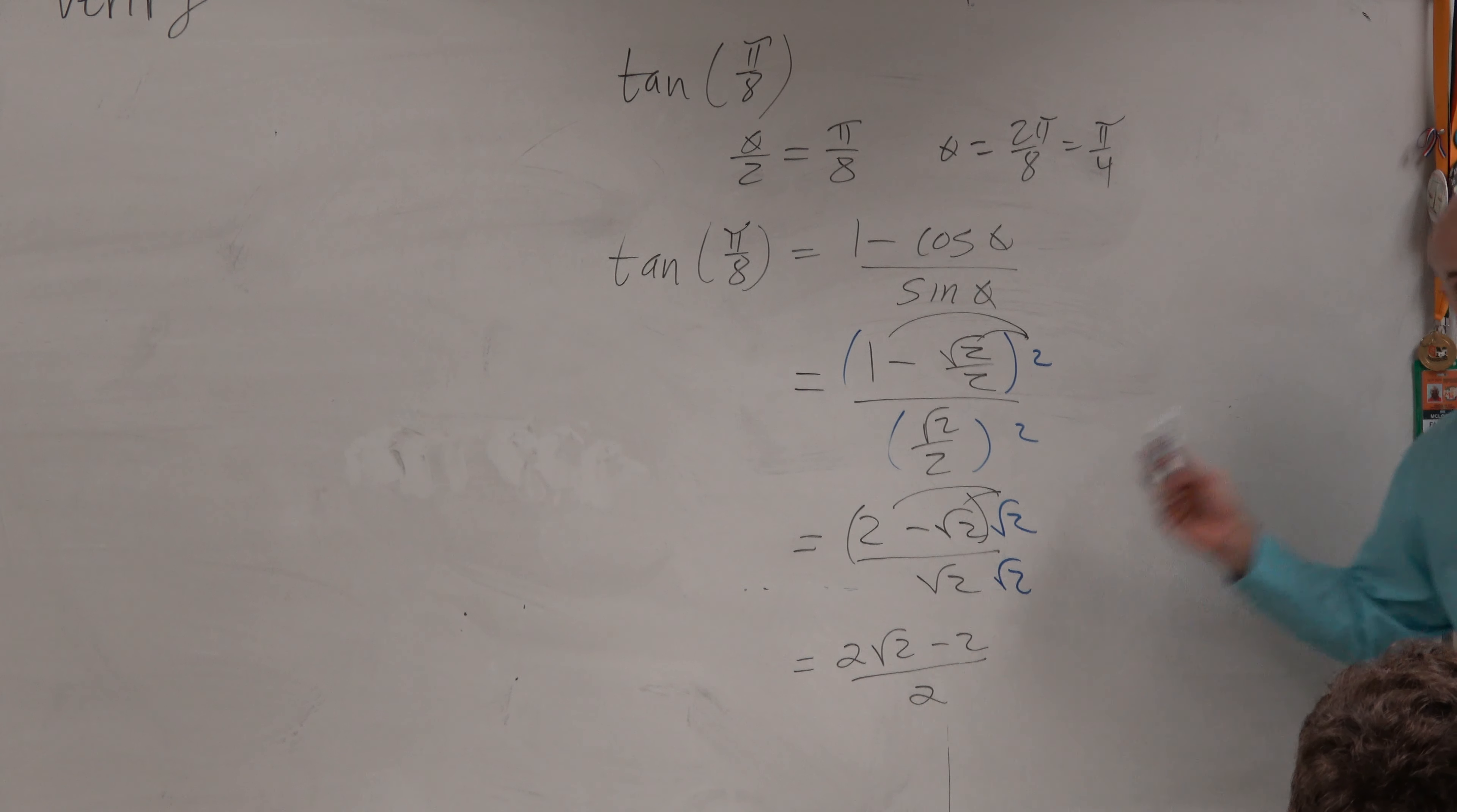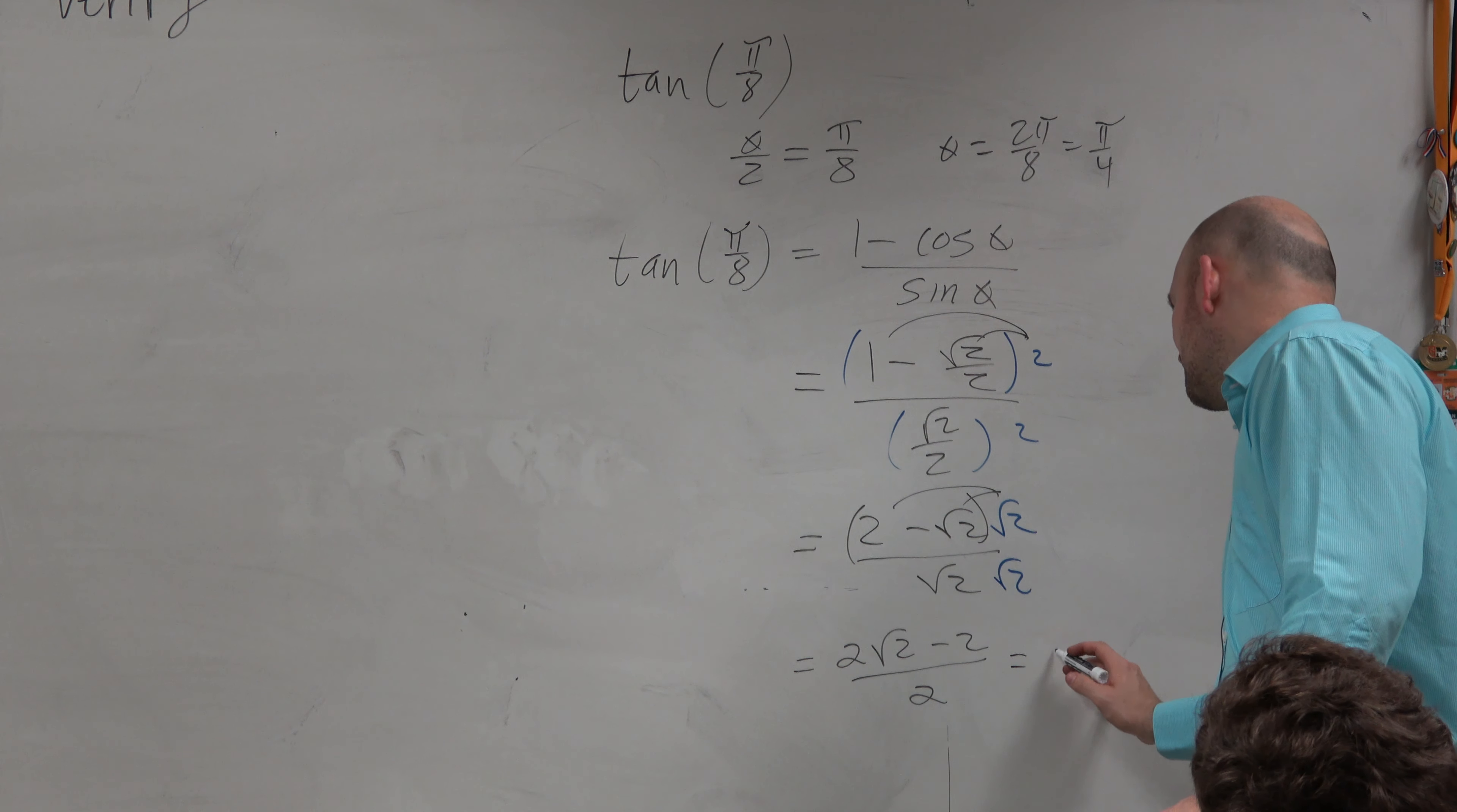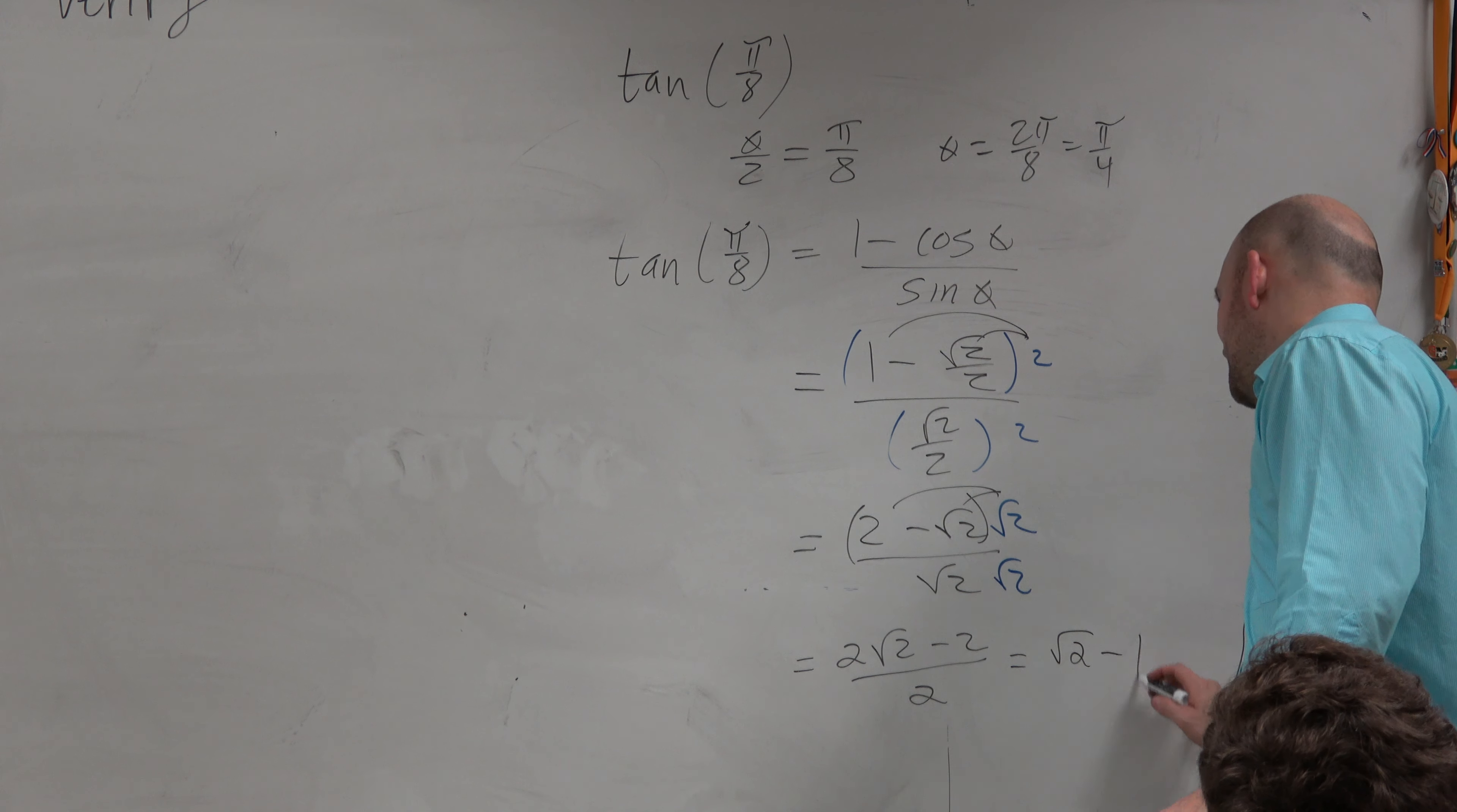The 2 doesn't divide out. That 2 divides into both of those terms. Therefore, we're left with the square root of 2 minus 1.